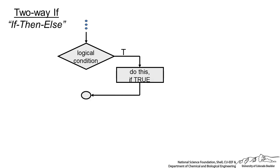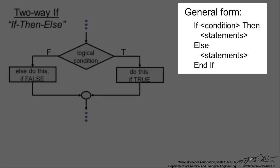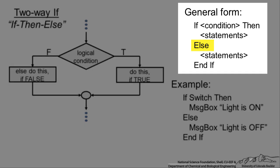A two-way if, very similar to the one-way, is just a little bit more complex. We come into this, ask a logical condition, if that is true, we do something. If it is false, then instead of not doing anything, like in the one-way if, we actually do something else. So in general form, we have if-then, just like in the one-way, but then we have this else. So, else, if it is false, then you do something. An example, if switch, and in this case, switch is going to be a boolean.